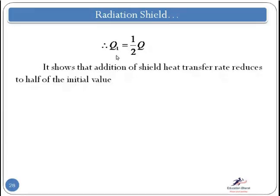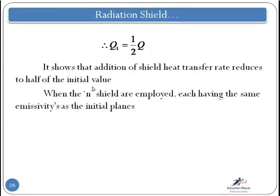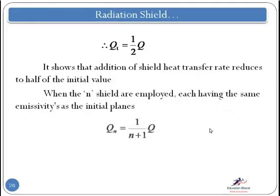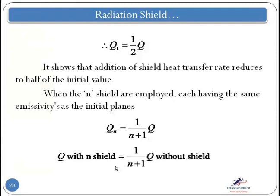Now if there are N number of shields employed, each having the same emissivity as the original planes, the general equation is: Q_n = 1/(N+1) · Q, where Q is the heat transfer rate without any shield and Q_n is the rate with N shields. So the heat transfer with N shields equals 1/(N+1) times the heat transfer without a shield.